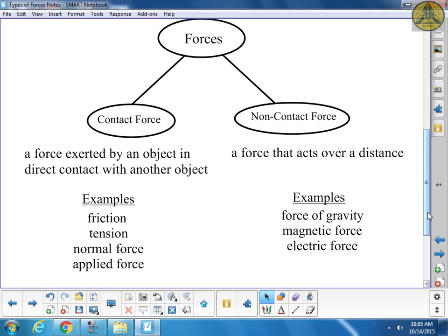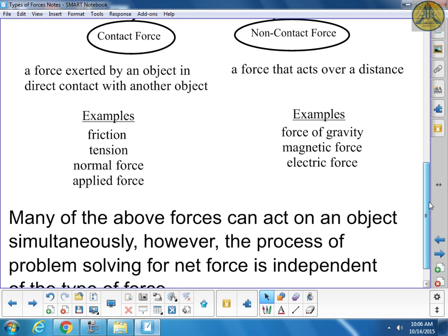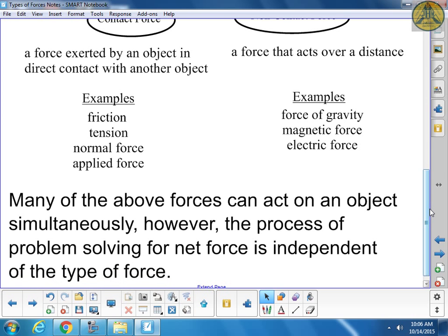You don't need to write this bottom note down. It's just a summary. These forces, you could have an object experiencing just one or all of these forces at the same time. The process of problem solving for the net force is independent of the type. It doesn't matter what kind of force it is. The net force is add them all up. If you've got the force of gravity that's acting on an object and a magnetic force is acting on an object, then they're in opposite directions. Then one of them is negative, one is positive, and then you add them up.